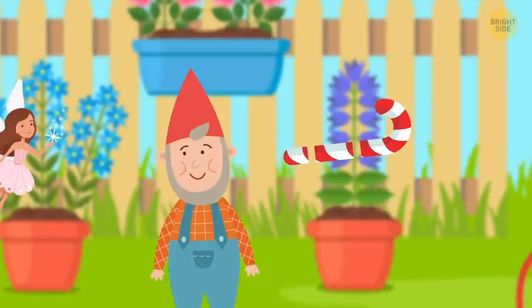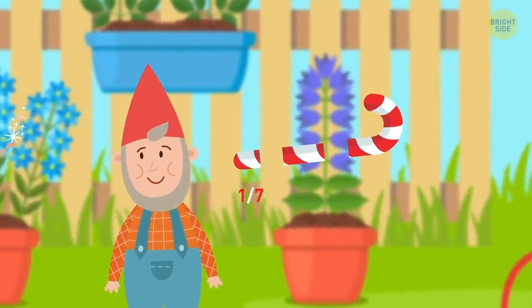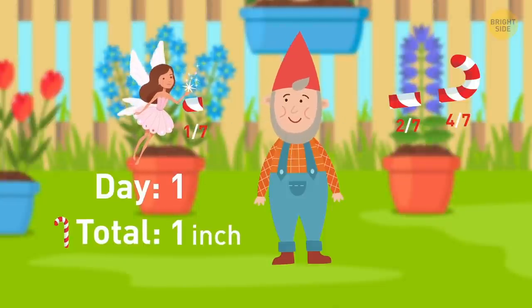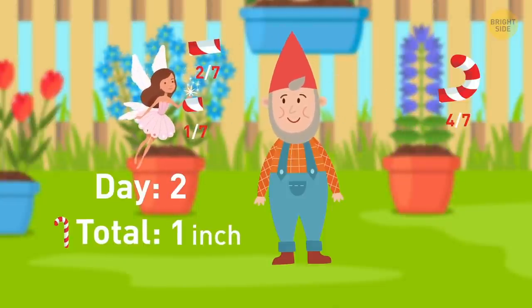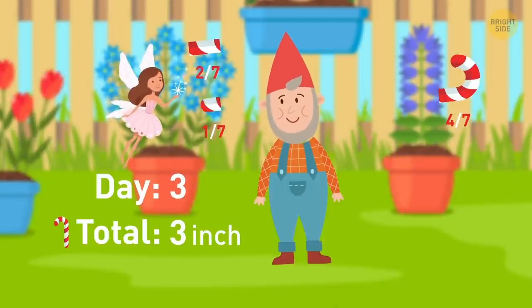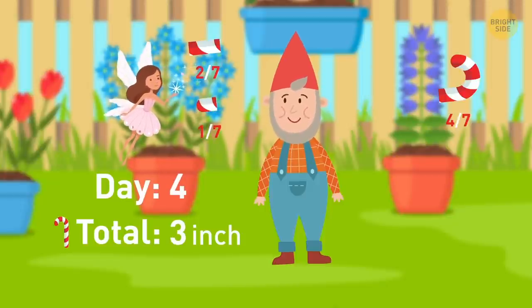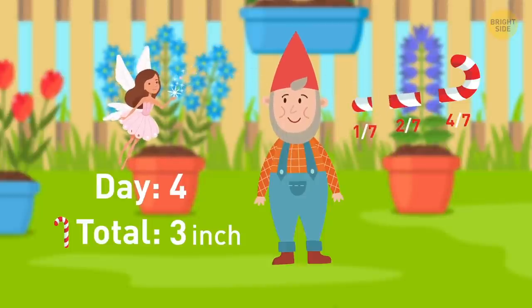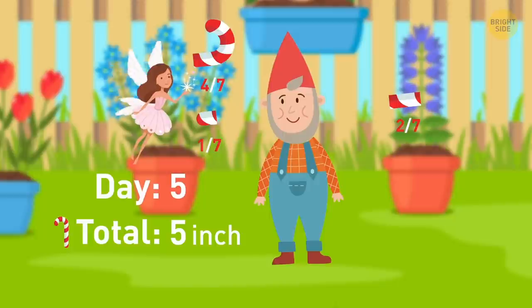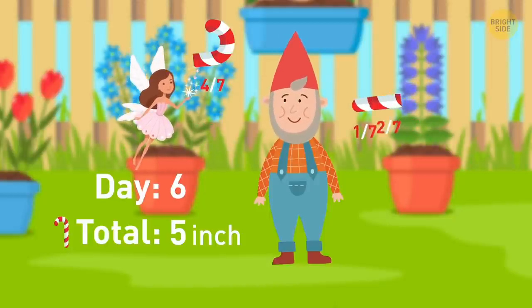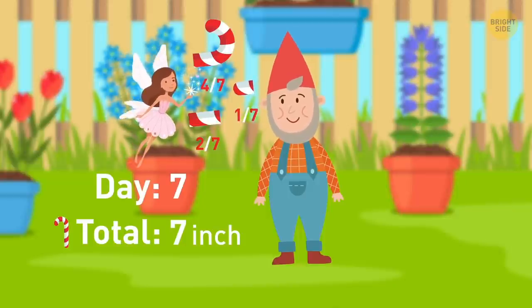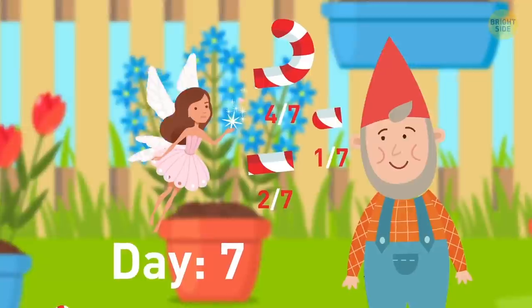He should make two cuts and divide the candy cane into the pieces of one-seventh, two-sevenths, and four-sevenths. The first day, he'll give her the one-seventh piece. The second day, he'll give her the two-seventh piece and will take the one-seventh piece back. After the third day, he will give her the one-seventh piece back. After the fourth day, he gets back the one-seventh piece and two-seventh pieces and gives her one four-seventh piece instead. Then, he gives her one-seventh. On the sixth day, instead of one-seventh, she gets the two-seventh piece. And on the last day, he gives her the final one-seventh piece. Of course, this whole thing goes kablooey if the fairy eats the candy during the week.